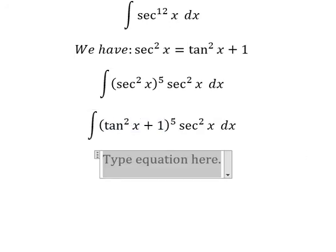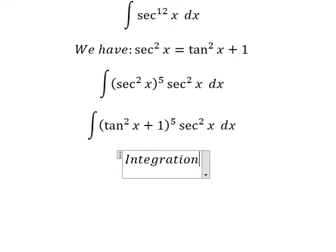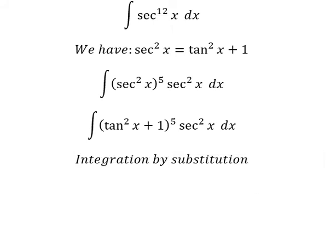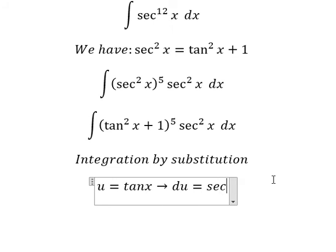Next we can use integration by substitution. I will use u = tan x. When we do the first derivative for both sides, we have du = sec²x dx.